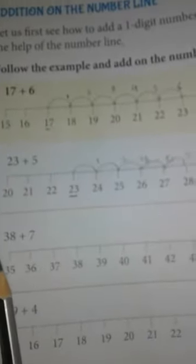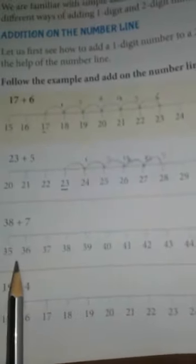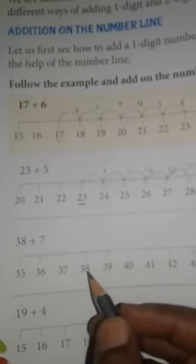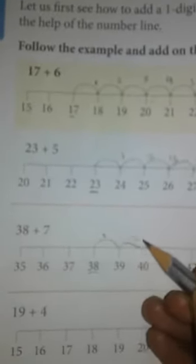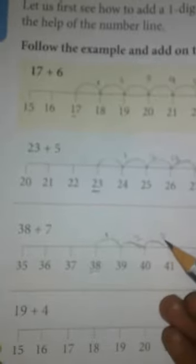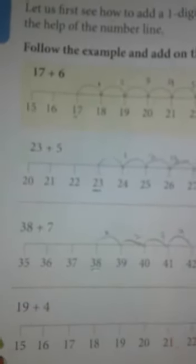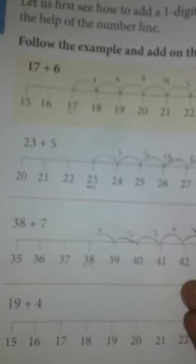Next is 38 plus 7. Here, number line starts from 35 and ends at 45. So student, in this number line, where is 38? 38 is here. Mark this number. Then, we have to add 7 more numbers. So student, 38 to 39 is 1, 39 to 40 is 2, 40 to 41 is 3 numbers, 41 to 42 is 4 numbers, 42 to 43 is 5 numbers, 43 to 44 is 6.